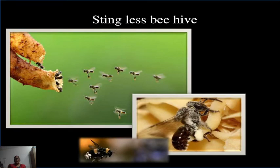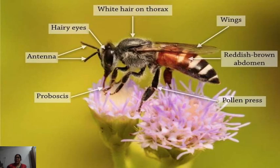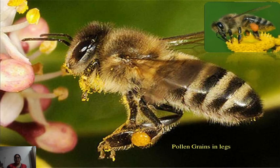This slide shows the hive of the stingless bee. The next slide shows the external morphology of the honey bee, including white hairs on the thorax, hairy eyes, antenna, proboscis, wings, reddish-brown abdomen, and importantly the pollen basket present on the hind leg — whose important role is to carry pollen. The following slide shows pollen attached to the legs of honey bees, highlighting that these are among the best pollinators.